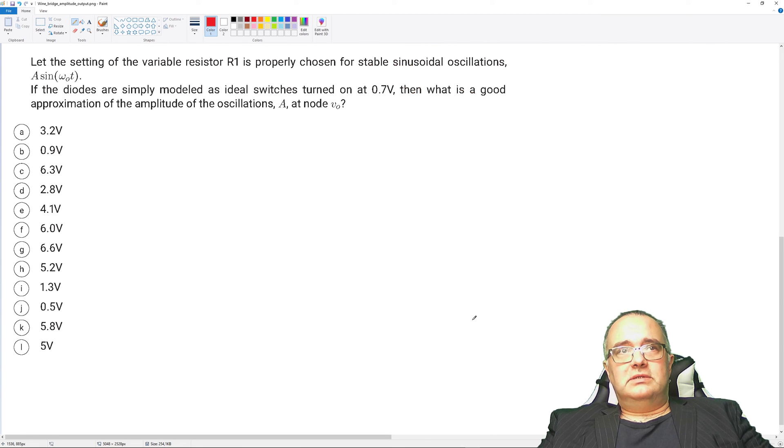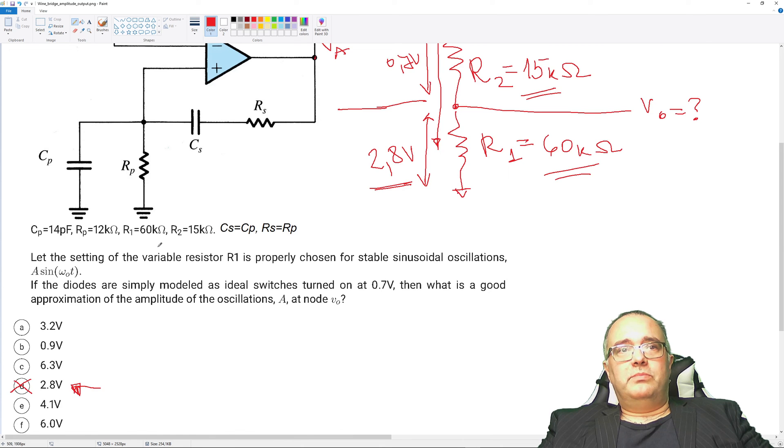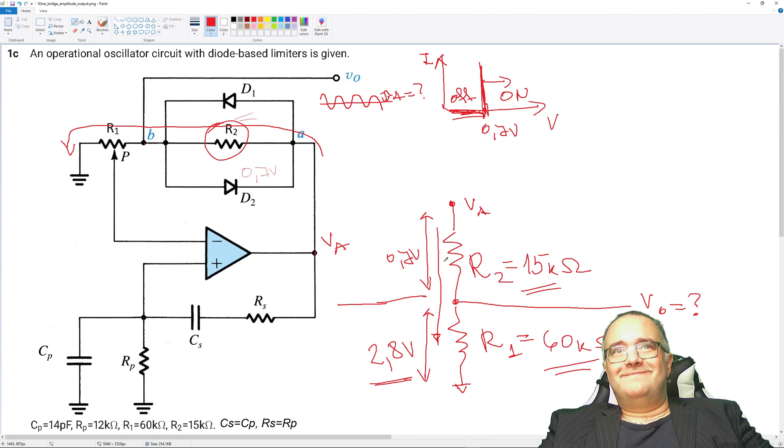Let's see if there is such an answer. Yes, here it is. This is good indication, so the amplitude of the oscillation will be 2.8 volts. Thank you very much for your attention.